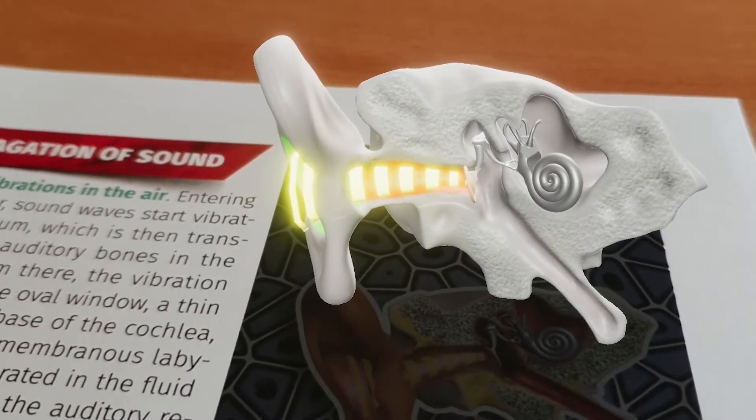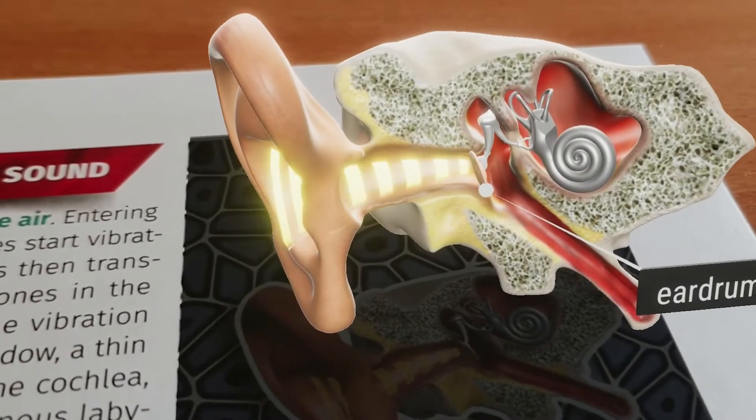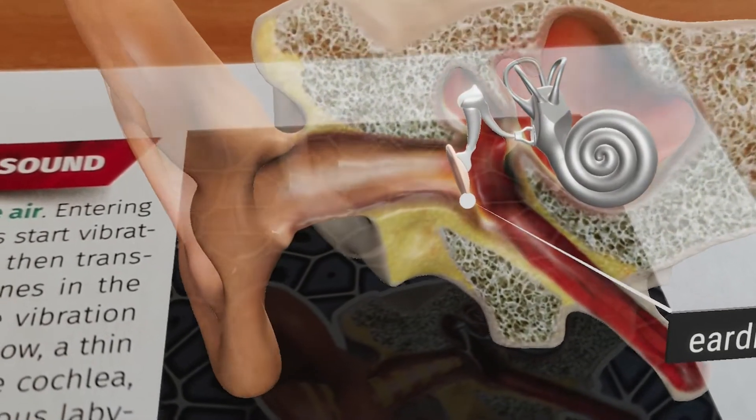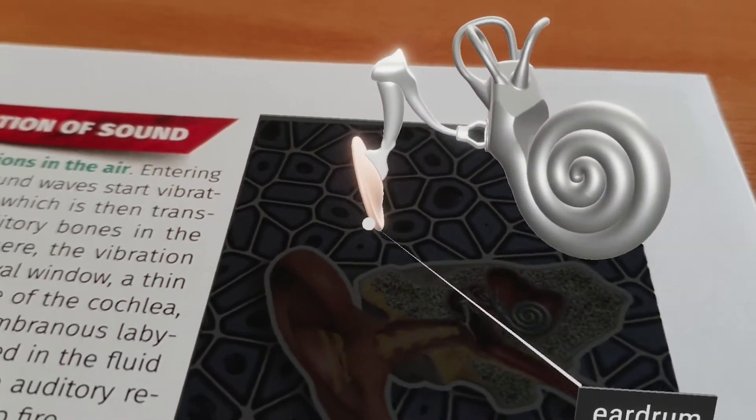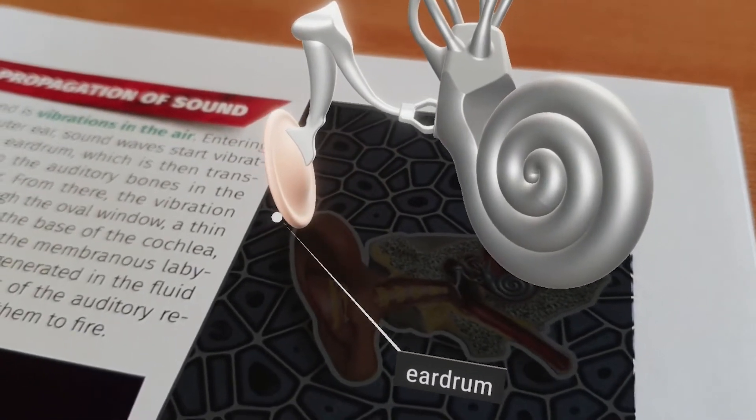The external auditory canal ends at the flexible eardrum, which protects the internal parts of the ear from the outside world while also playing a role in transmitting sound.